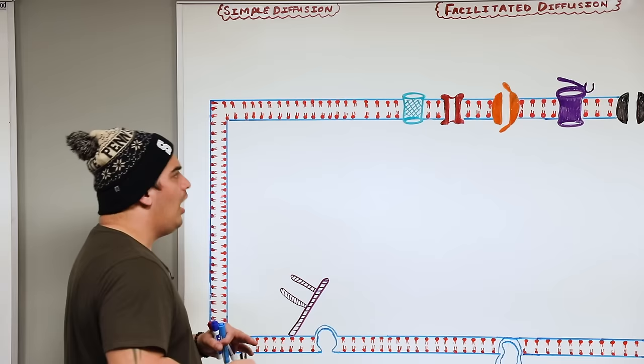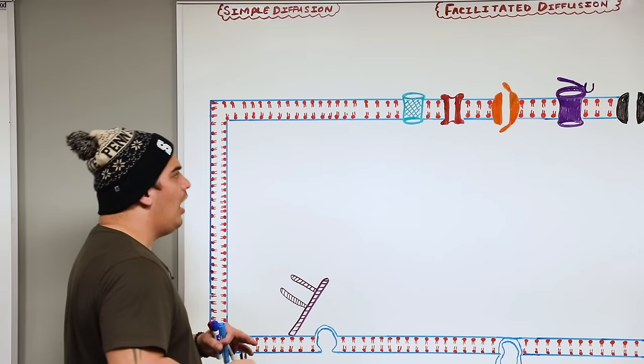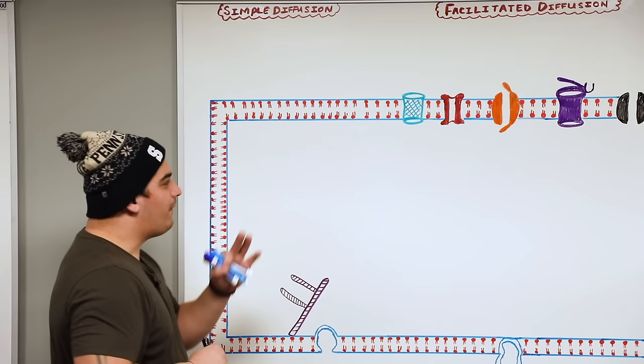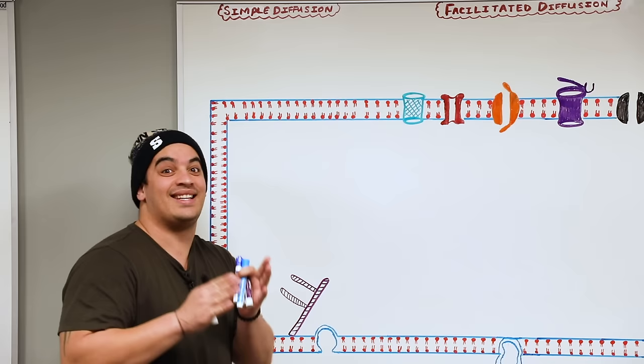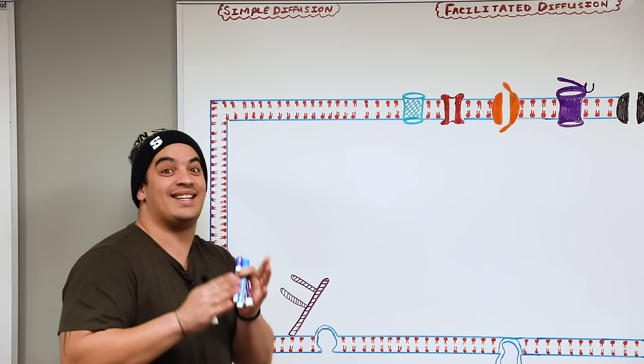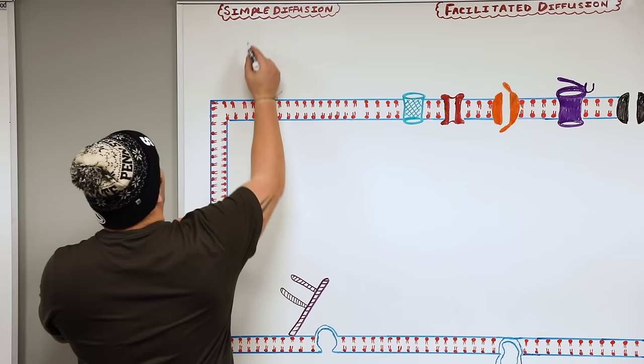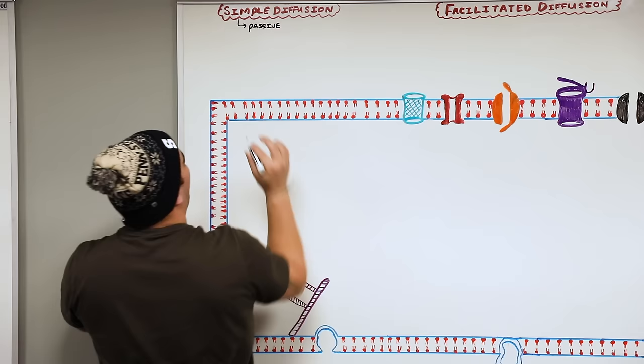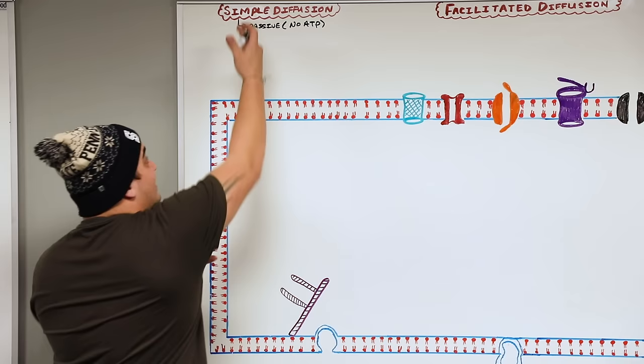All right Ninja Nerds, let's get into it. When we talk about membrane transport, we have a lot of different mechanisms. The first one is simple diffusion. Simple diffusion is a passive process — it doesn't involve any energy. There's no ATP that is utilized in this type of membrane transport mechanism.